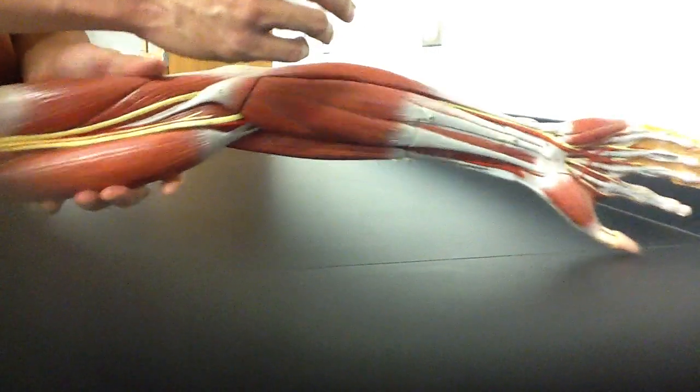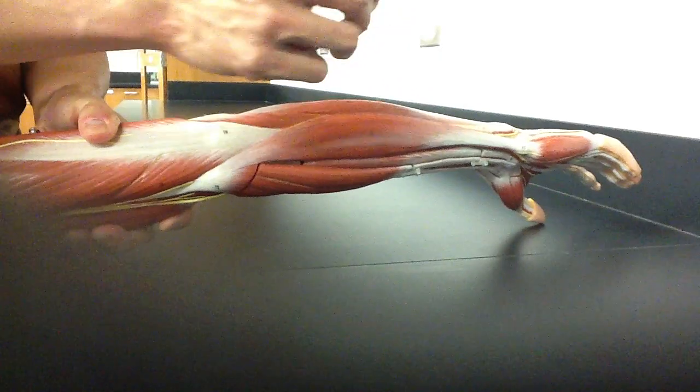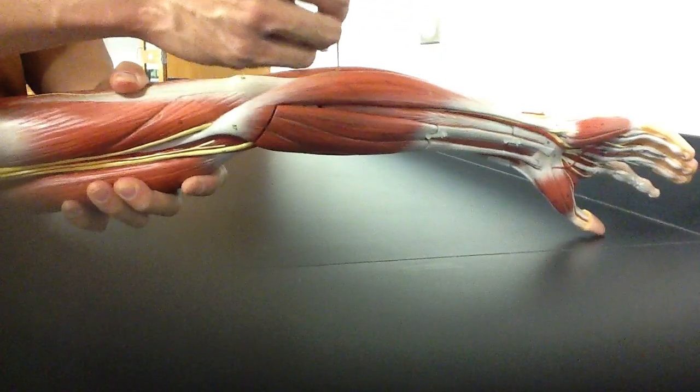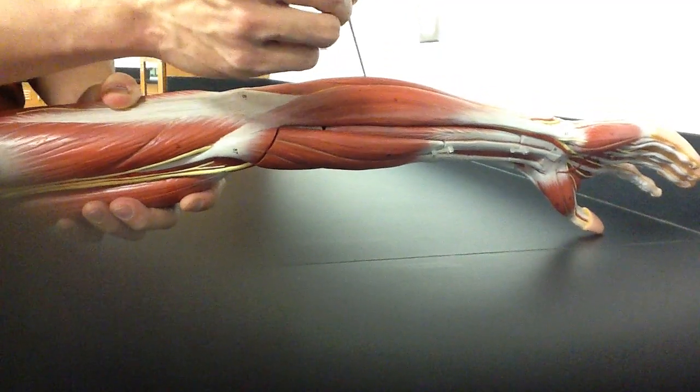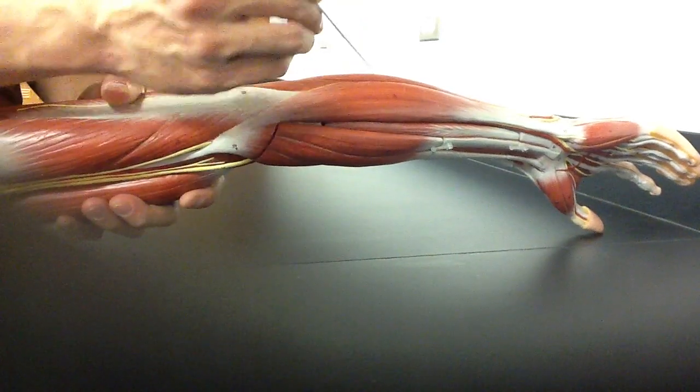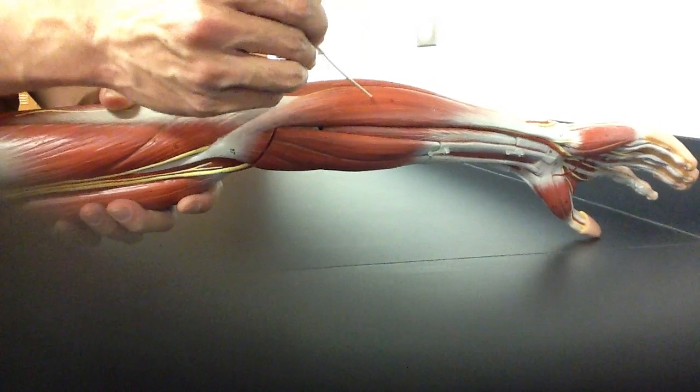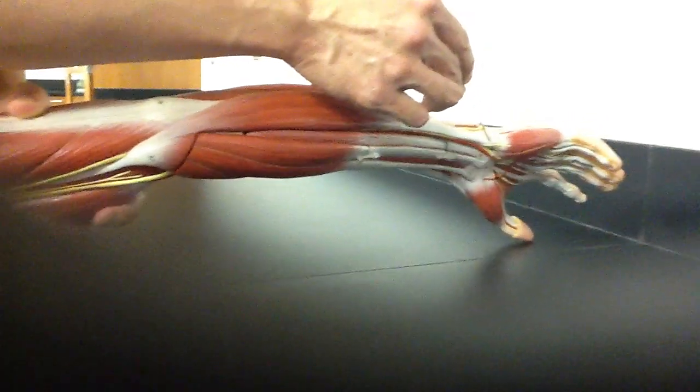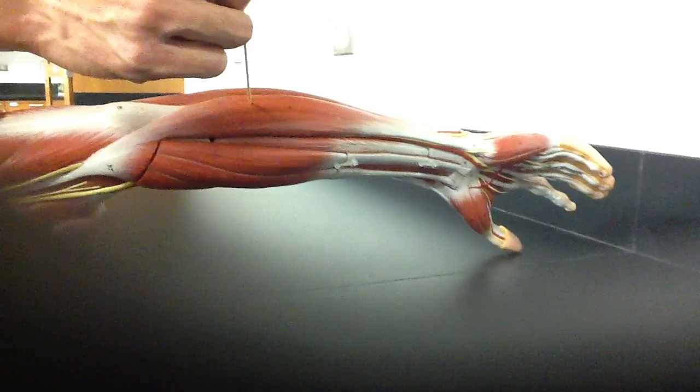So if we're going to just go in order, we're going to start with the ulna and then we're going to go right to this first muscle. This first muscle would be the flexor, because this is the flexor side. Flexor carpi ulnaris. So it flexes, inserts on the carpi on the ulnar side.